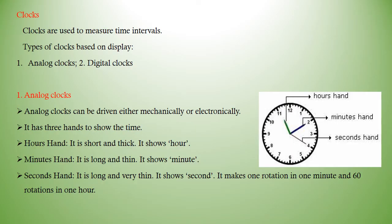Clocks are used to measure time intervals. Types of clocks based on display: Analog and digital. Analog clocks can be driven either mechanically or electronically. It has three hands to show time: hours hand, minutes hand, and seconds hand.